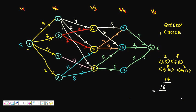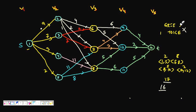We can make an even worse example for greedy — for instance, changing the edge weight to 80 instead of 8 would give an even longer greedy path. This confirms that greedy choice fails and we should not use it for finding the optimal solution.